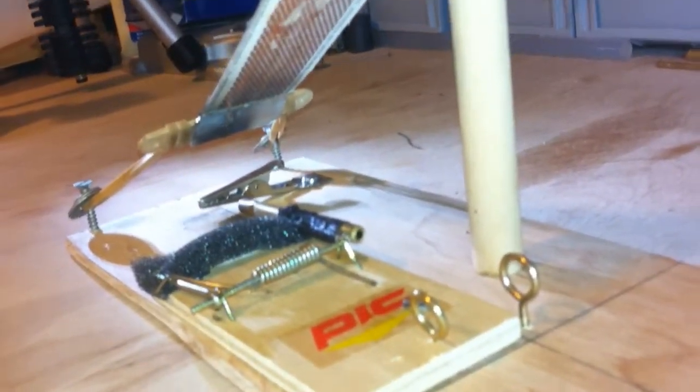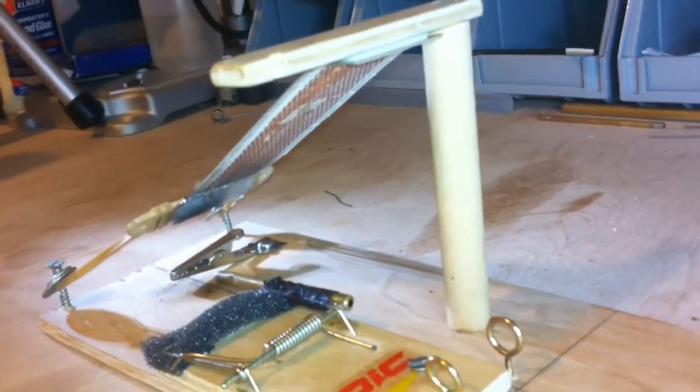Suspended above the mousetrap is a matchbox striker pad. The striker pad is held in place on one end by a wooden stand and on the other end by some rubber bands.